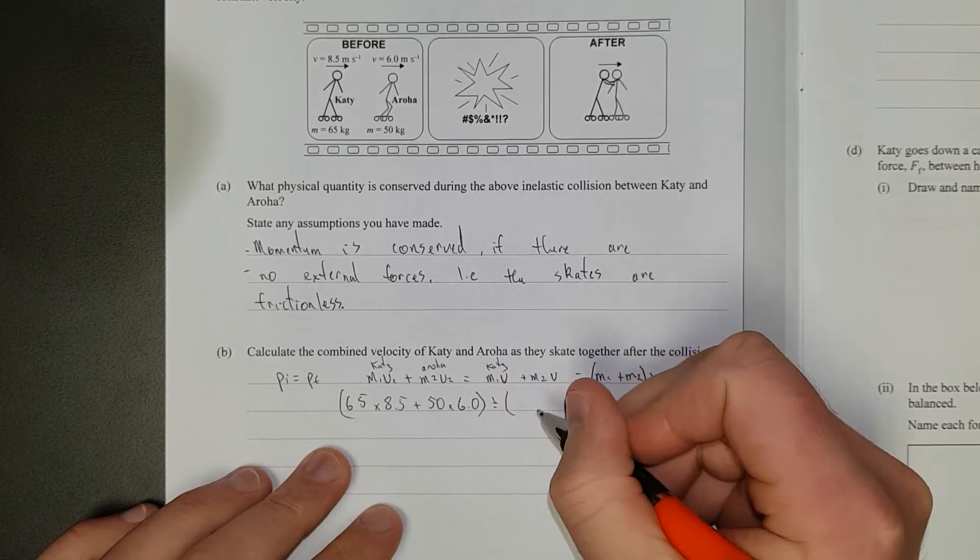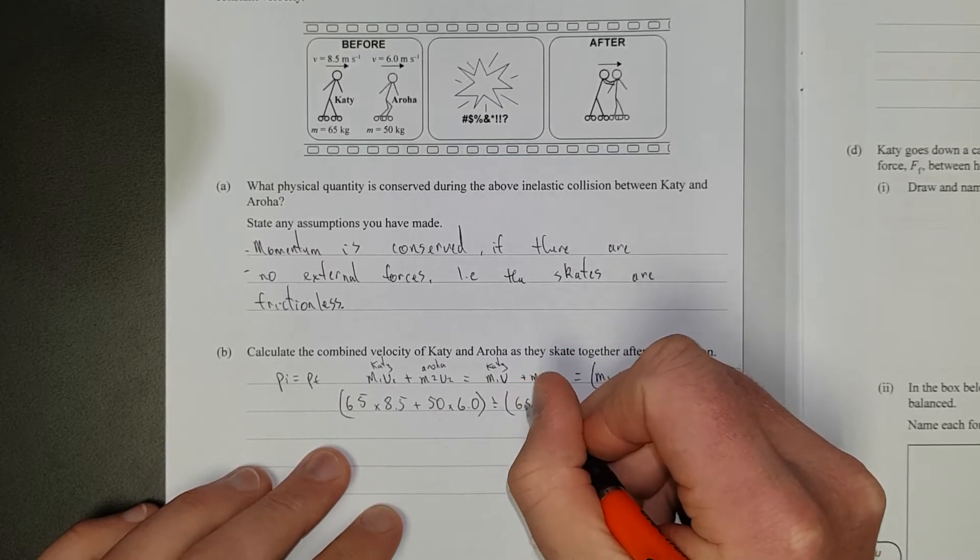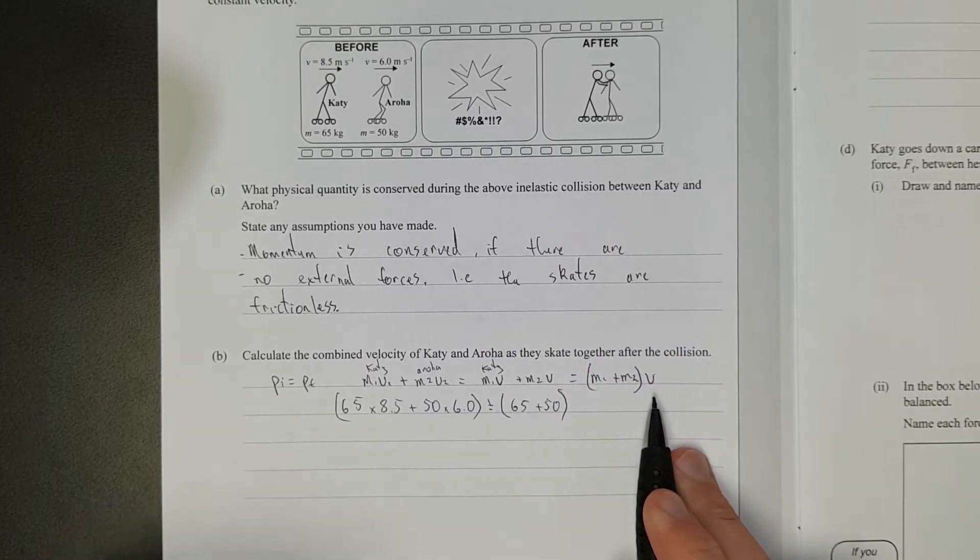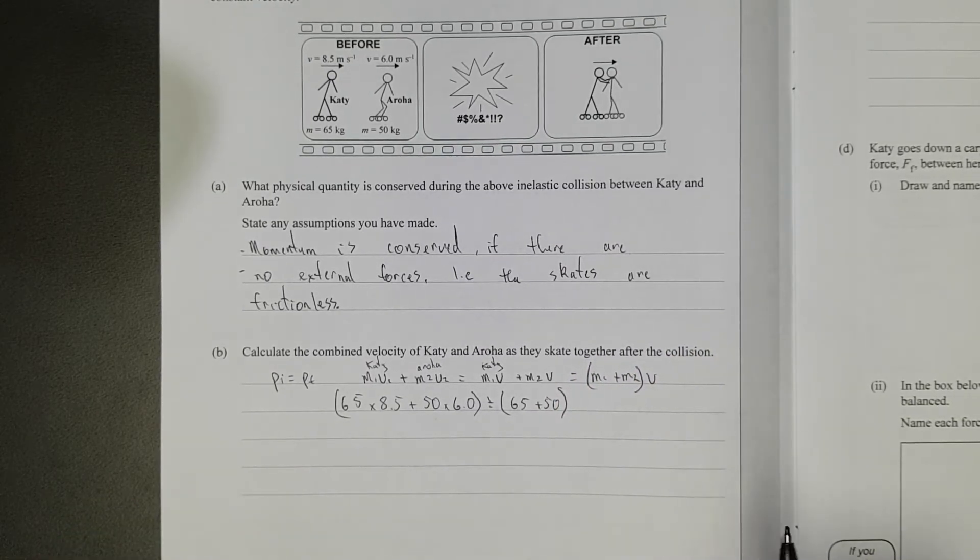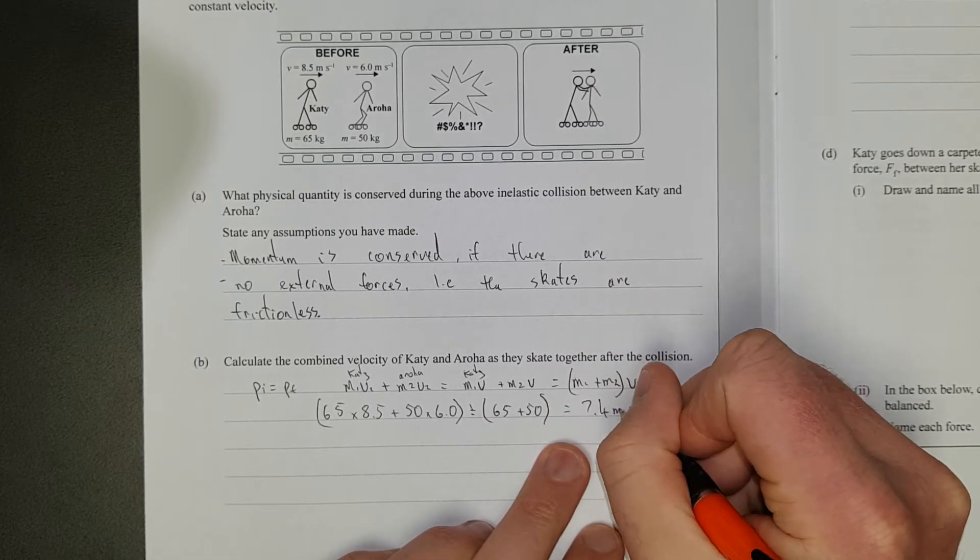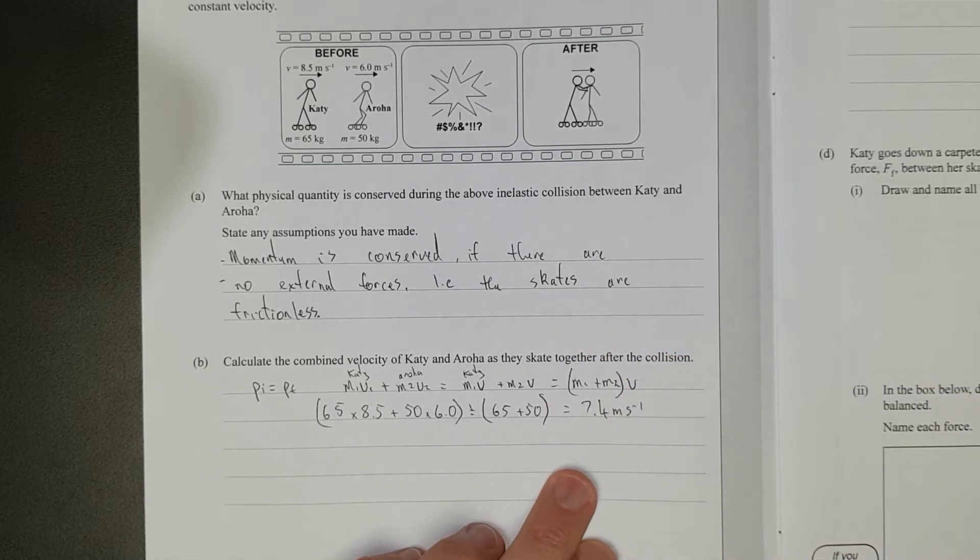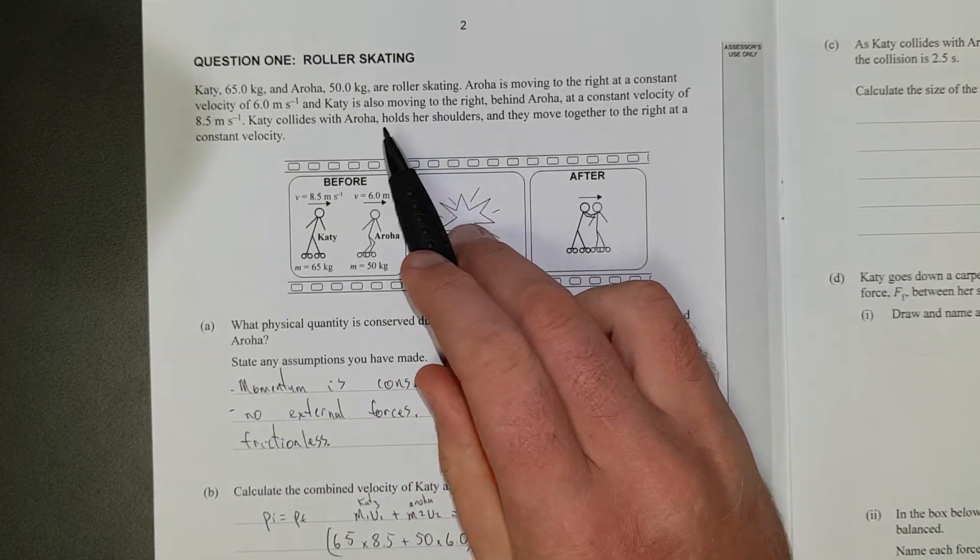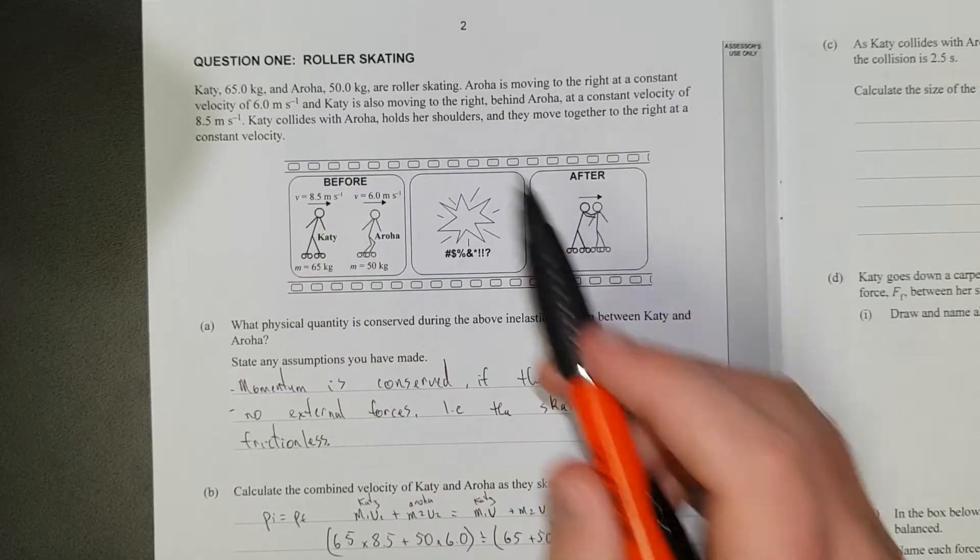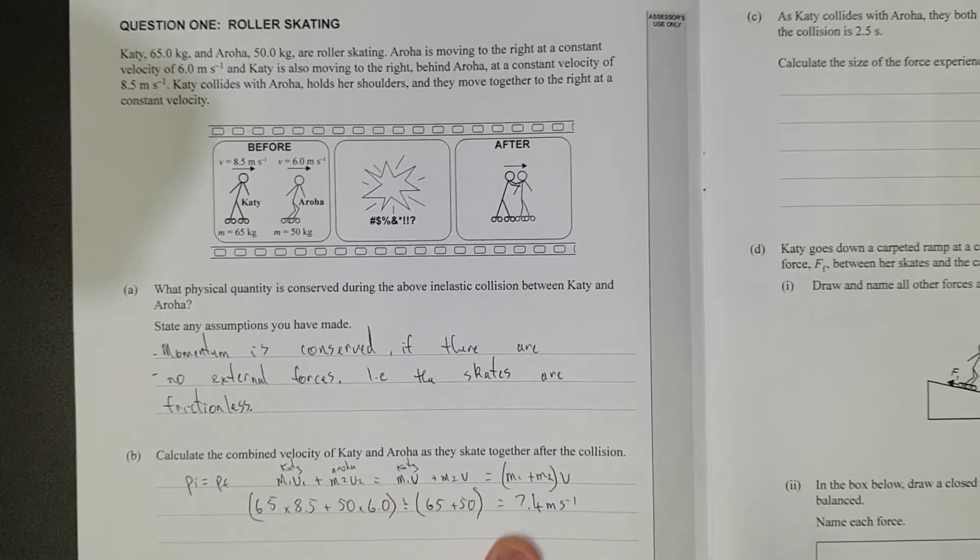Brackets around this, divided by the total weight, which is 65 plus 50. And that'll give me the velocity afterwards, which is equal to 7.4 meters per second minus 1. Just double-checking, we've been given everything, well, that was 3SF, that was 3SF, but that's 2SF, which means our answer has to be 2SF.